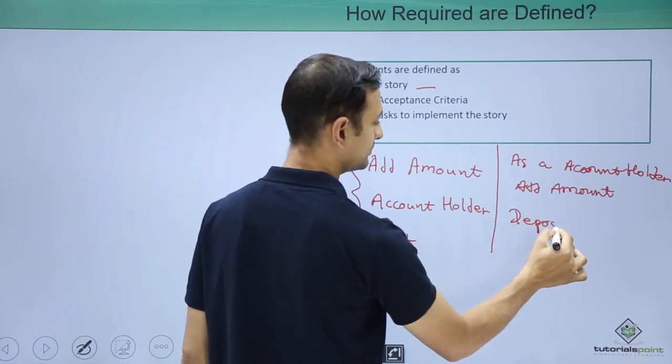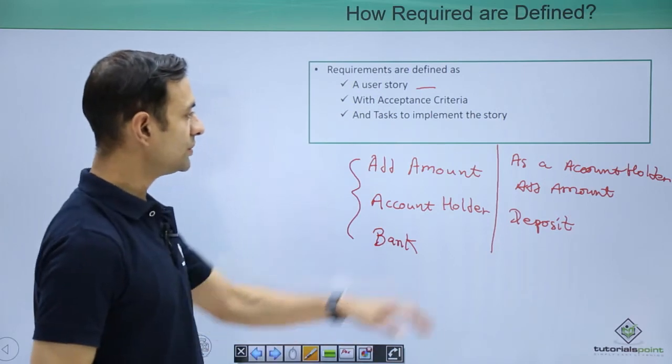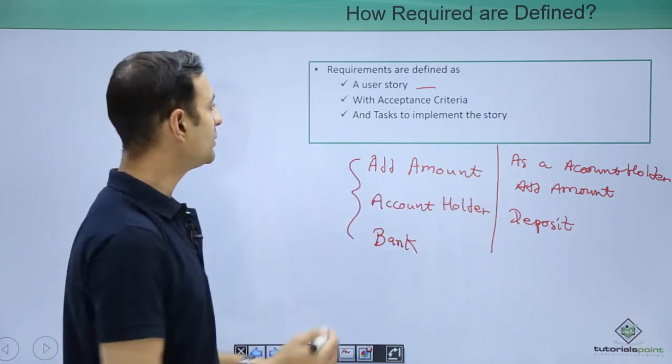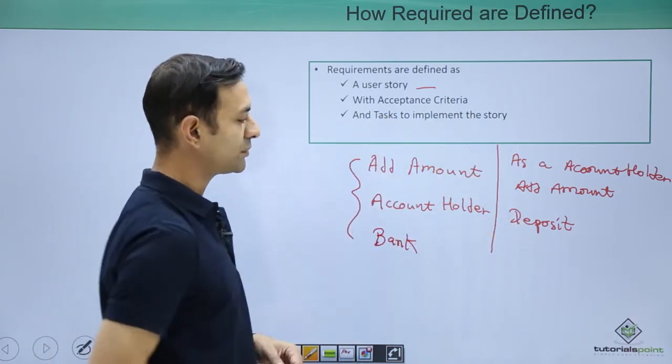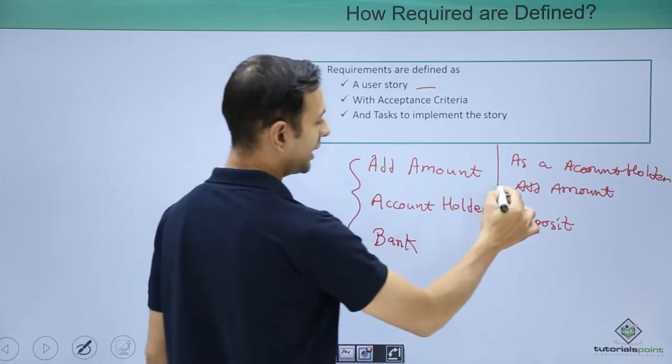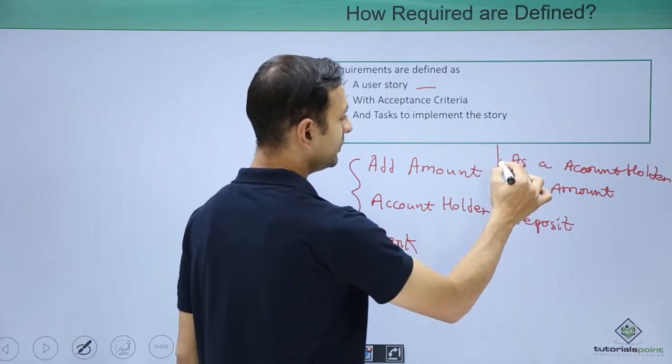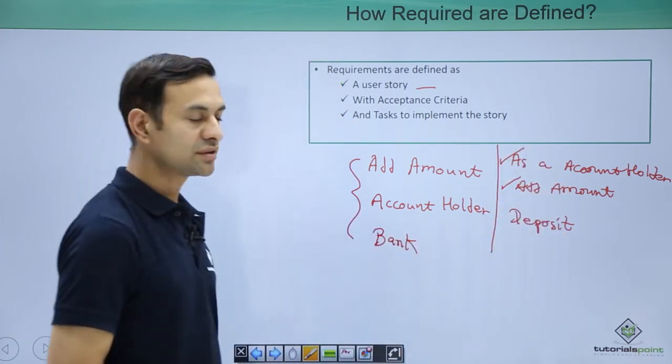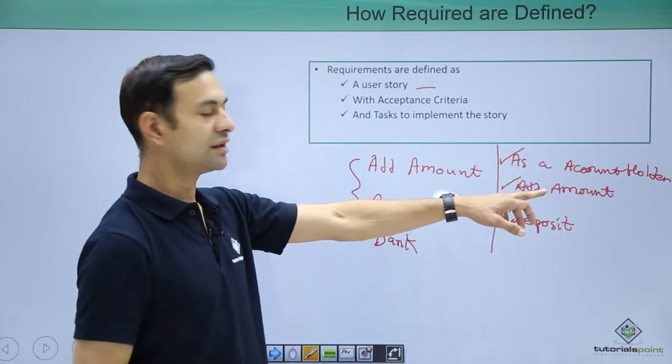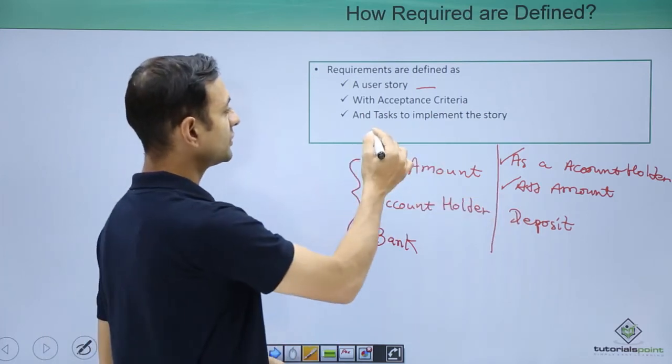This is the user story. Now, with acceptance criteria: I should be able to add amount, and I should be checked as an account holder. These are acceptance criteria. Then, tasks to implement the story would be: